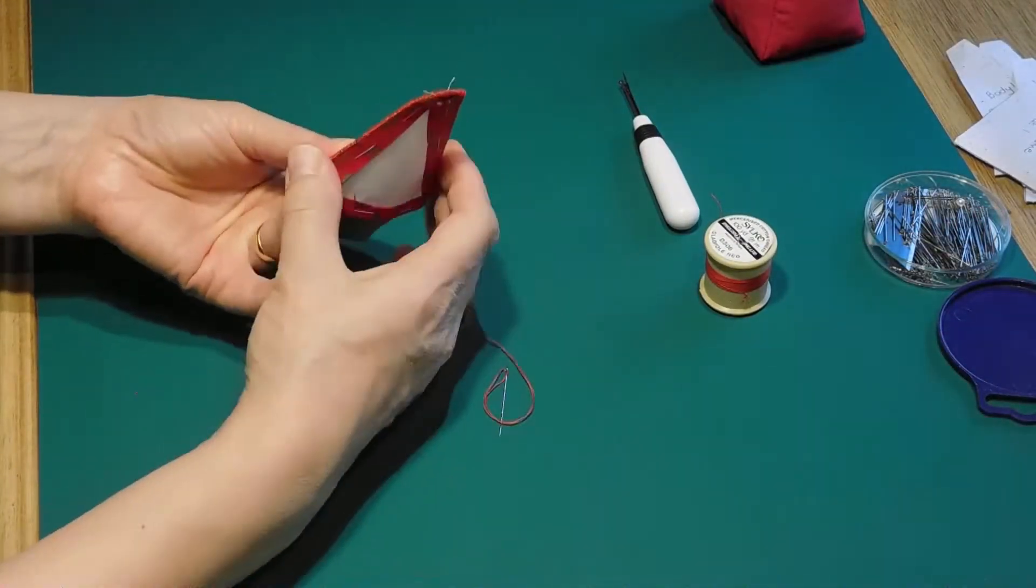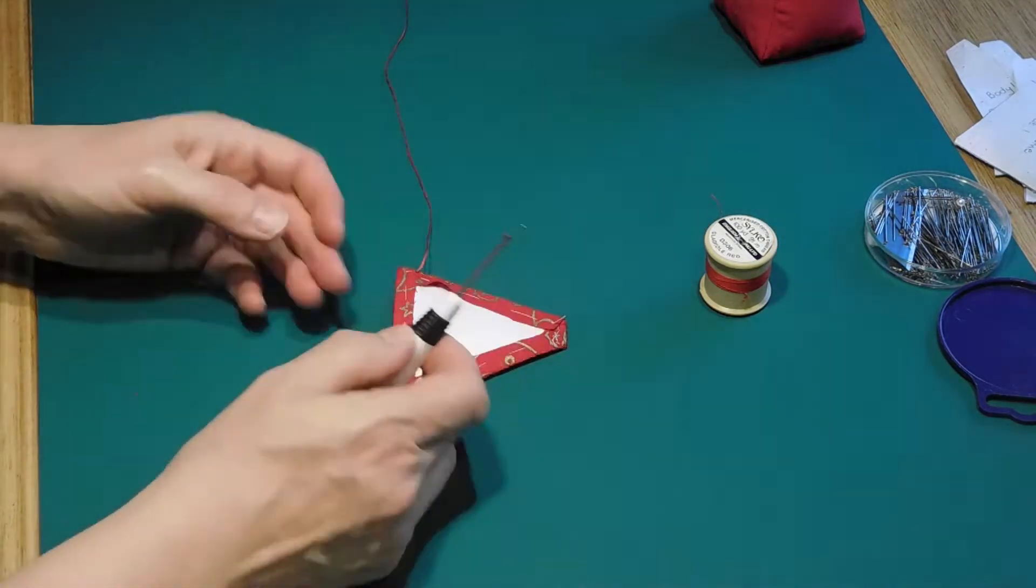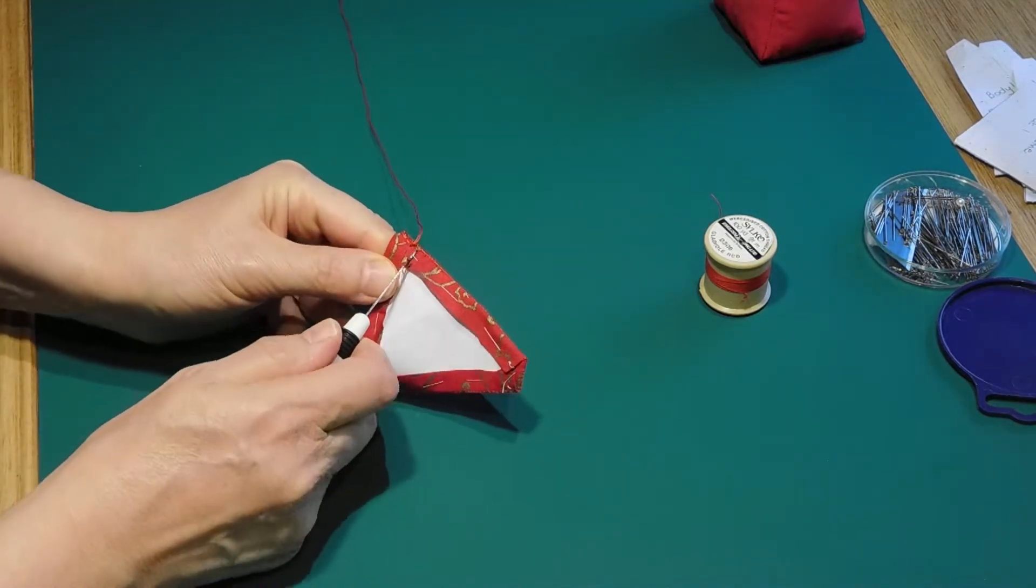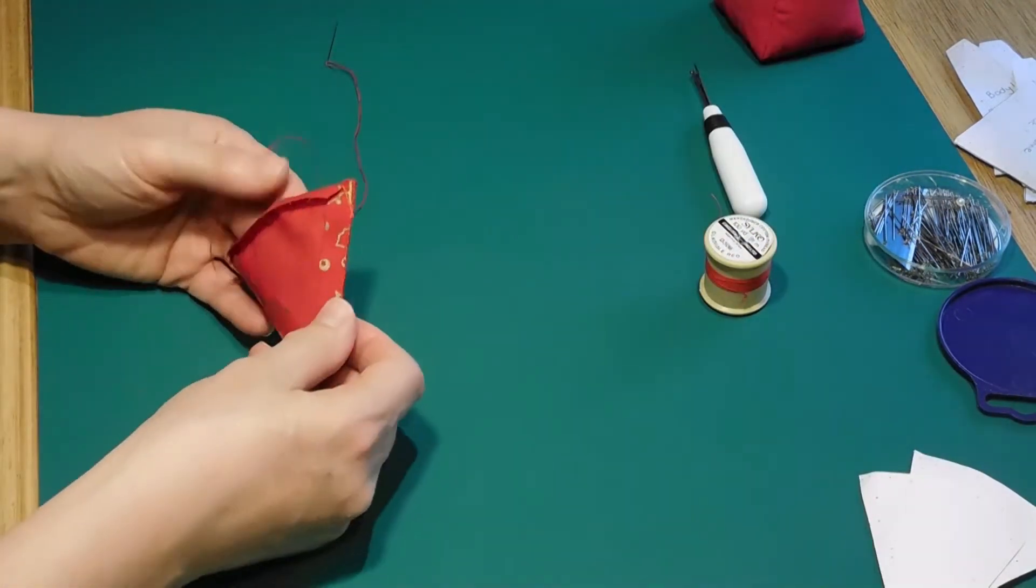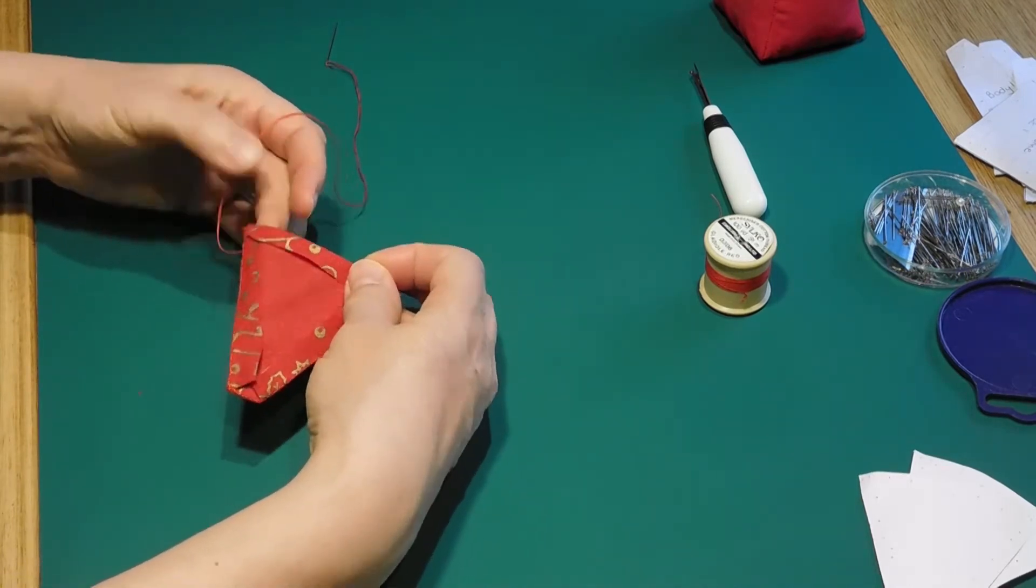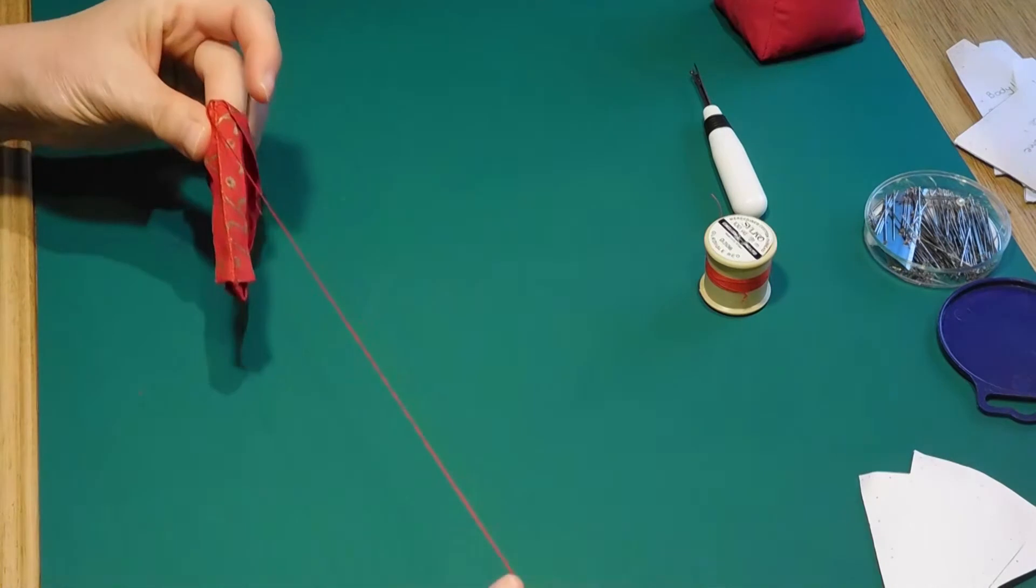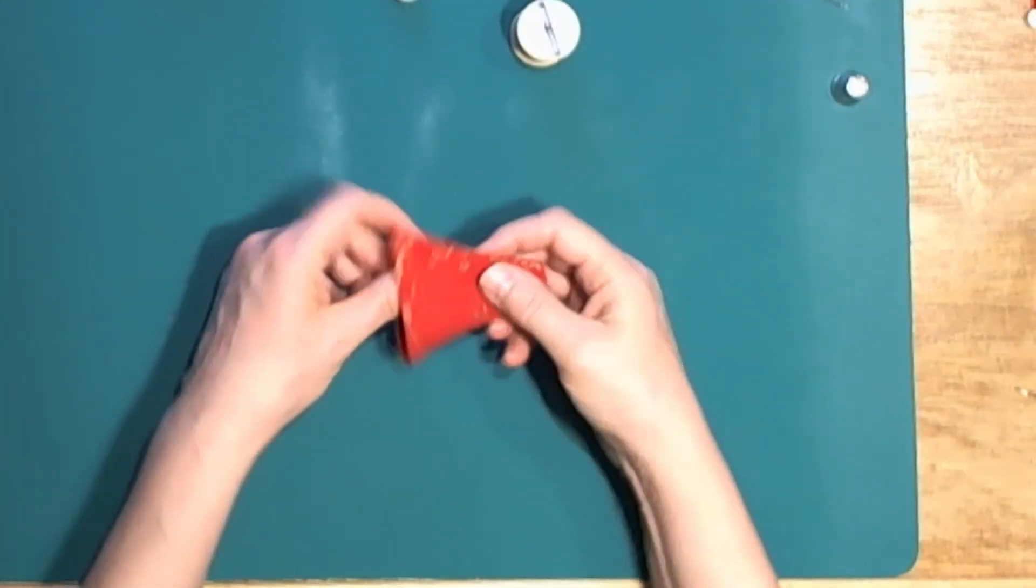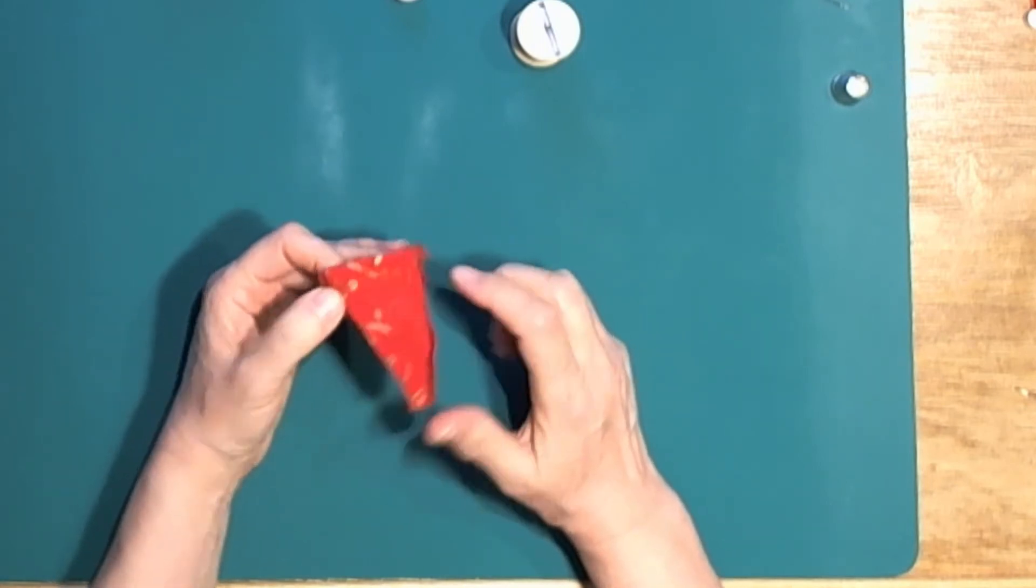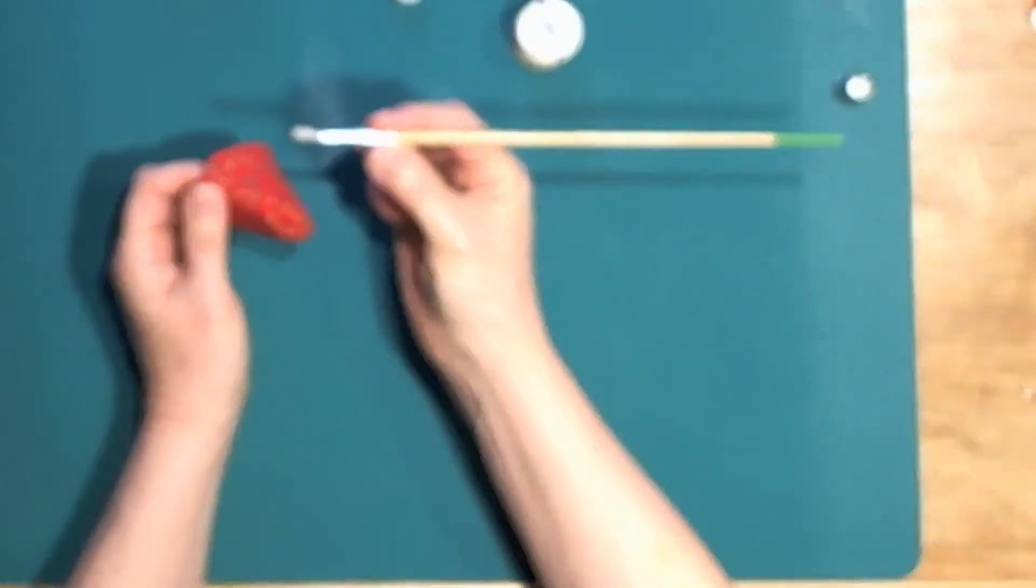When complete, remove the tacking stitches and take out the cardboard templates. Using thread of the same color, hem along the brim of the hat. Turn the hat inside out and place it on the gnome body.